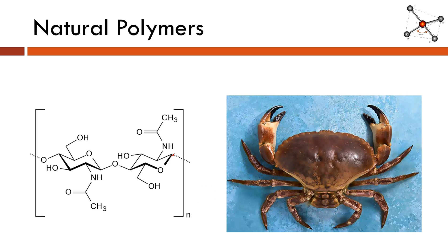Here's our next polymer. You probably can't guess from looking at the structure alone, but maybe the picture of that crab helps out a little bit. A crab is not a polymer itself, but its shell is a polymer. It's made out of something called chitin. We've got two repeating units shown here, and they repeat again and again and again to give the crab shell its characteristic texture.